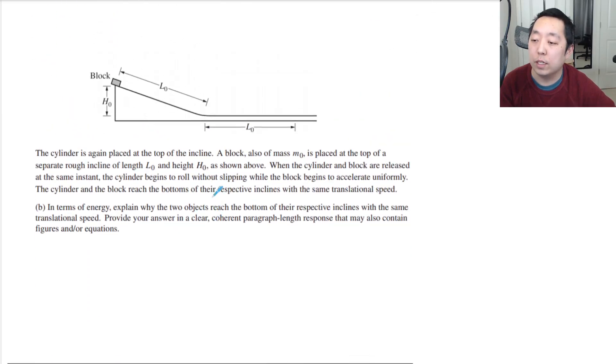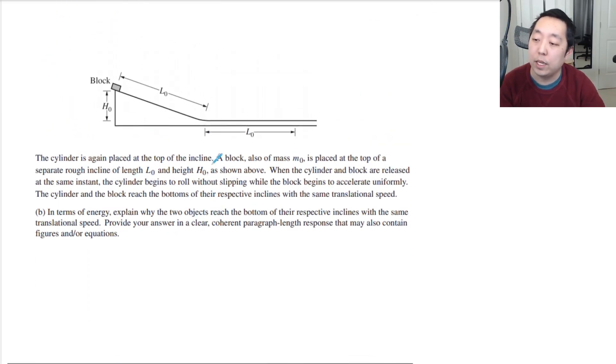The cylinder is placed again at the top of the incline. A block also of mass m0 is placed on top of a separate, rough incline of length L0 and height H0 from above. When the cylinder and block are released at the same instant, the cylinder begins to roll without slipping, while the block begins to accelerate uniformly. The cylinder and the block reach the bottoms of their respective inclines with the same translational speed. In terms of energy, explain why the two objects reach the bottom of their respective inclines with the same translational speed. Provide your answer in a clear, coherent paragraph.